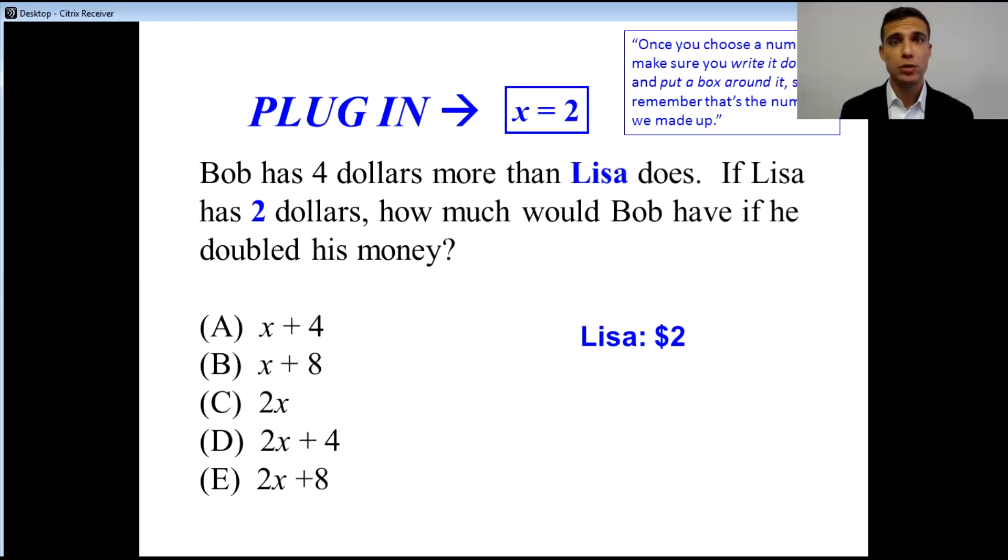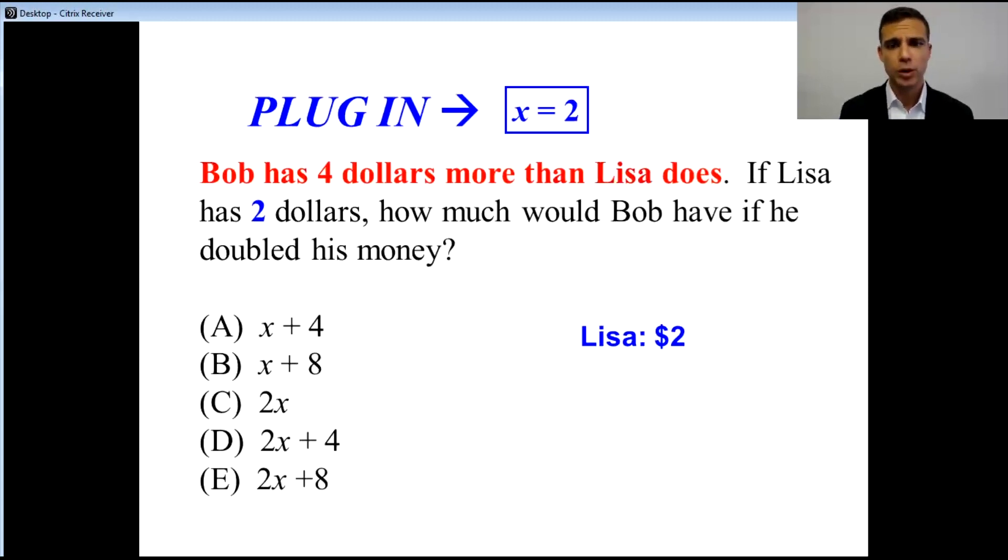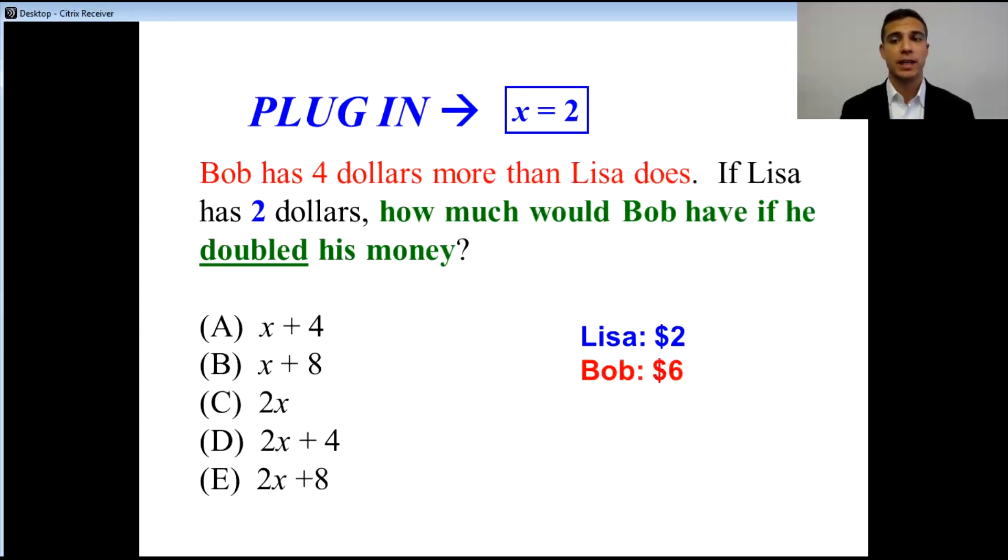We say that Lisa has $2. If we look at the problem, Bob has $4 more than Lisa does, which means Bob has $6. The question wants to know how much Bob would have if he doubled his money. If Bob has $6 and we double it, he now has $12.